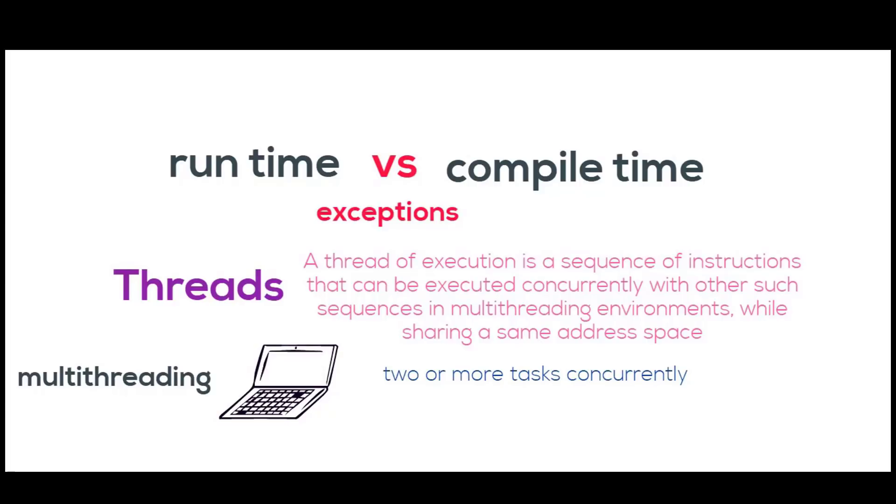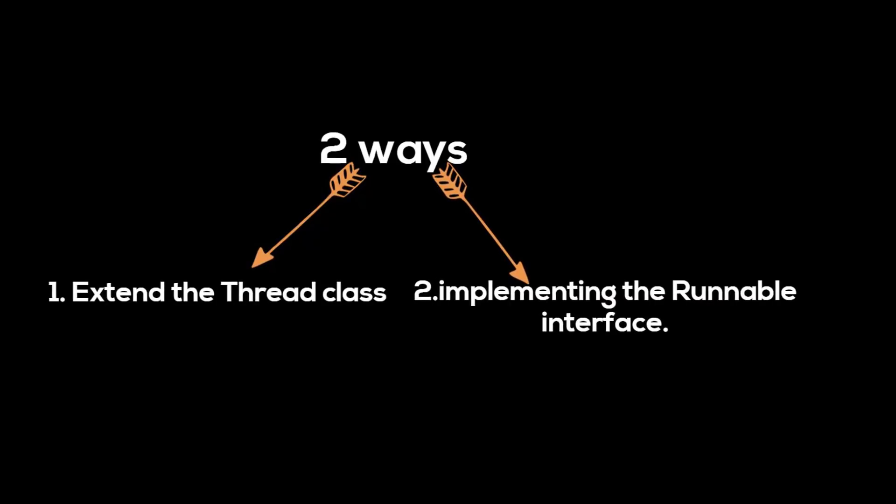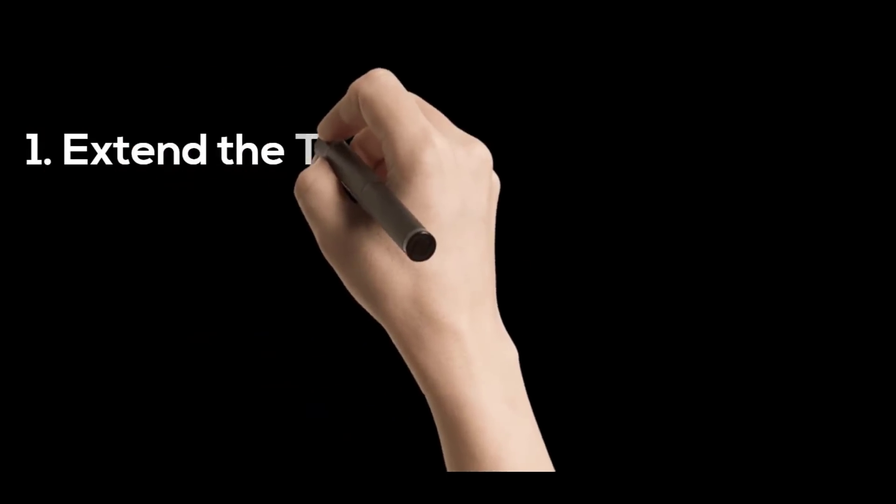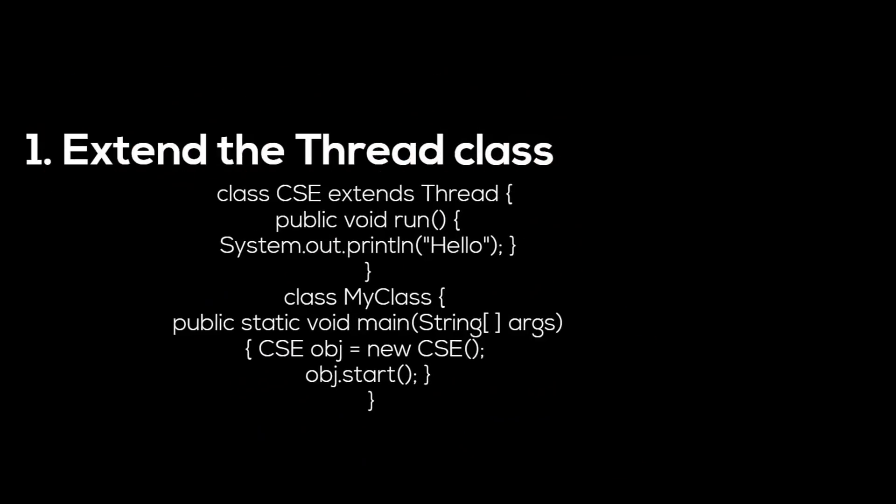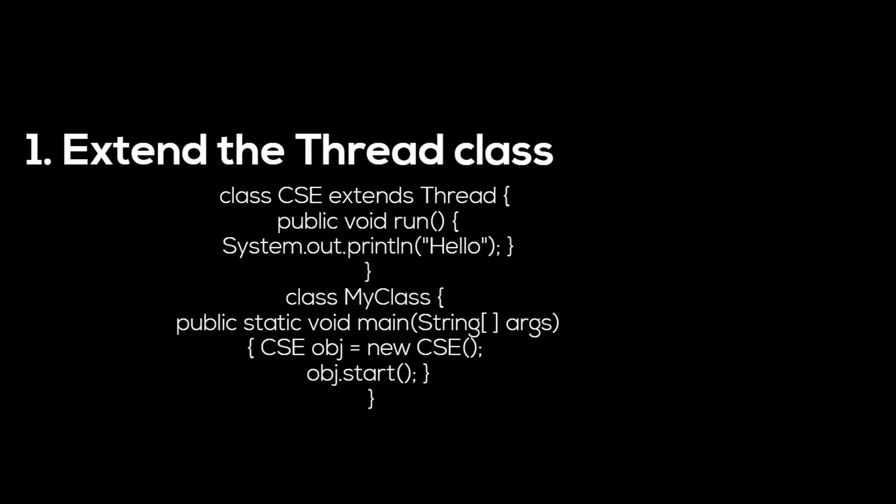Multi-threading can be done in two ways. In the first method, we can extend the Thread class. In the second method, we can implement the Runnable interface. In the first method example program, we have inherited Thread class and also we have overridden its run method. After creating the new object of class, we call the start method to run the thread.